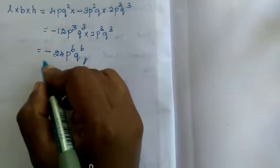So what is the value of L into B into height? Minus 24 P to the power 6 Q to the power 6. Good.